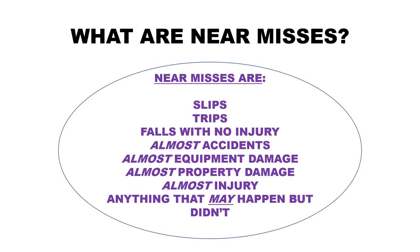What are near misses? Near misses are slips, trips, falls with no injuries, almost accidents, almost equipment damage, almost property damage, almost injury — anything that may have happened but didn't.